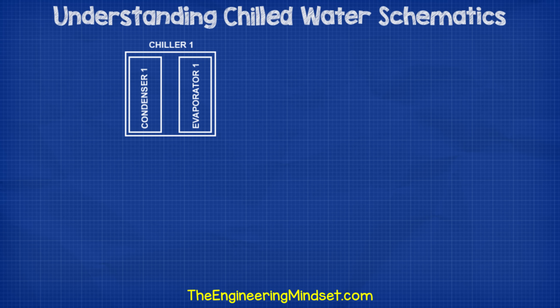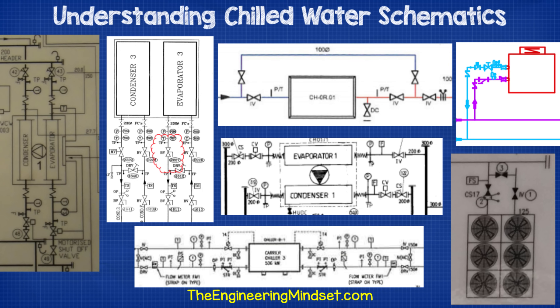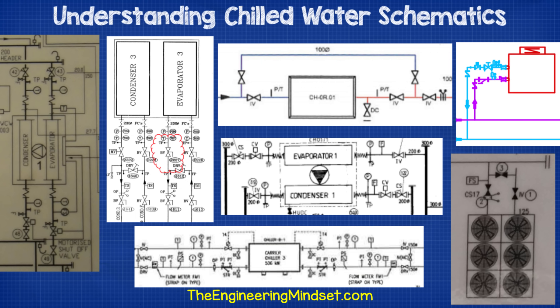So let's look around the system and each of the components to understand how it works. I've based this design off a real-world example for an older, constant-flow, water-cooled chiller system, as it's easy to understand. I'll show some real-world examples as we go through, and we can compare these to some different designs so that you understand the differences. We'll first start with the chiller — I'll just show you some examples of how chillers are illustrated on schematics, as it really varies. The two in the top right and the one in the bottom right are all air-cooled chillers, and the rest are water-cooled.